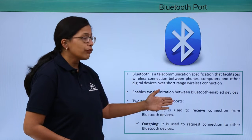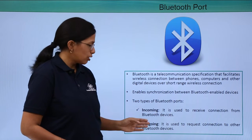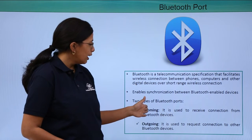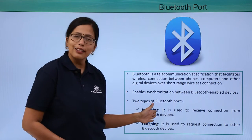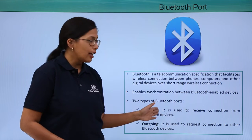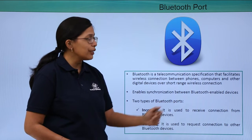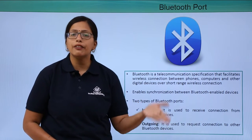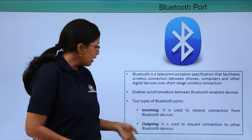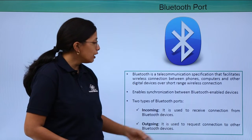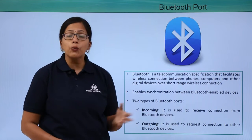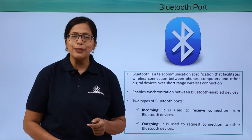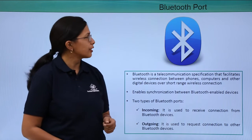There are two types of Bluetooth ports: incoming and outgoing. Incoming, as the name suggests, is used to receive connection from other Bluetooth-enabled devices. The outgoing port is used to request connection to other Bluetooth-enabled devices.